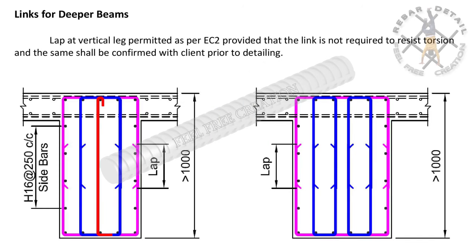If beams depth greater than 1000mm, then we prefer lap as per EC2, two U-bars may act as links.